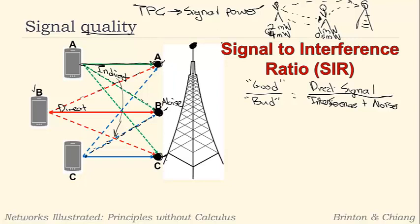And SIR is how we quantify signal quality. So when we try to equalize signal quality rather than signal power, we're trying to equalize the desired signal-to-interference ratios.